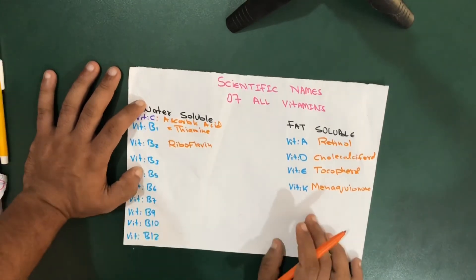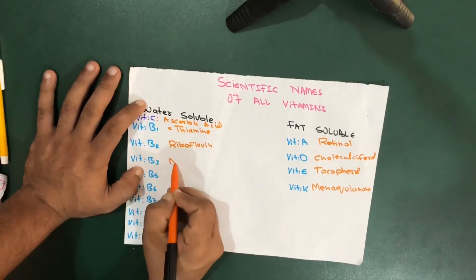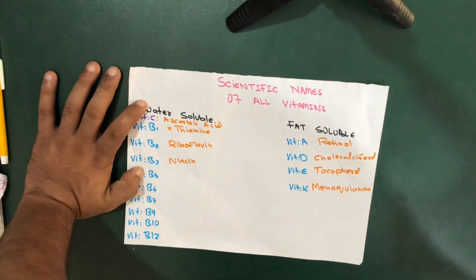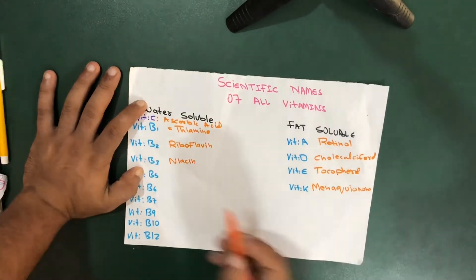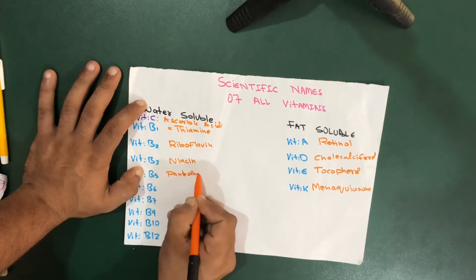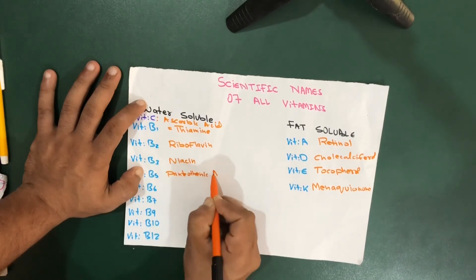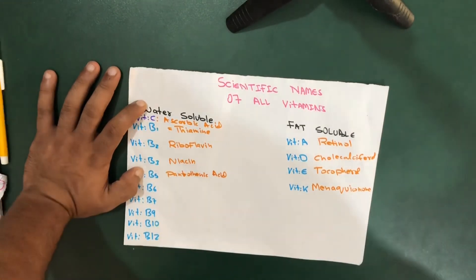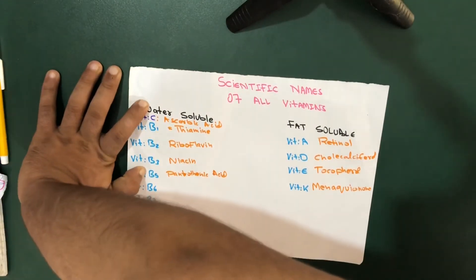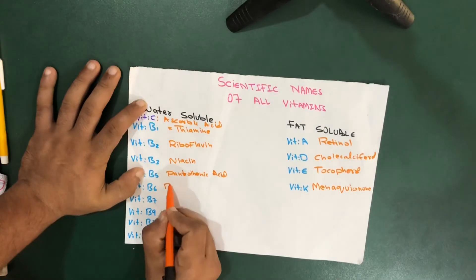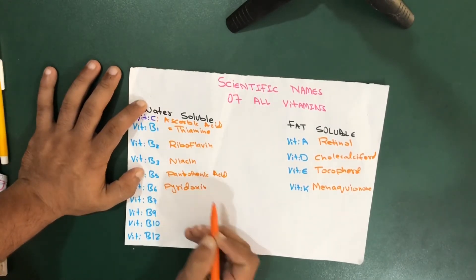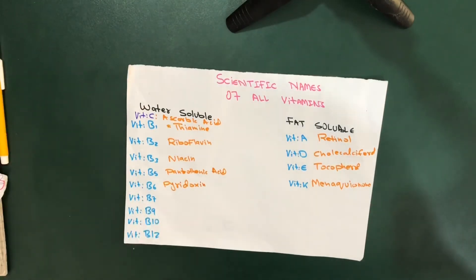Vitamin B3 we have niacin. For vitamin B5 we have pentothenic acid. Vitamin B6 is pyridoxin.